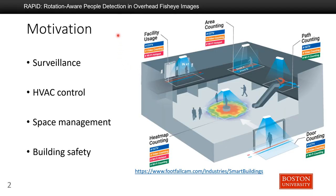Our motivation is to help build modern smart rooms, which typically consist of surveillance, HVAC control, space management, and building safety. All of these features depend on detecting and localizing people, so an indoor people detection algorithm is required.